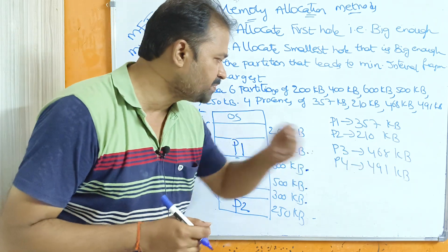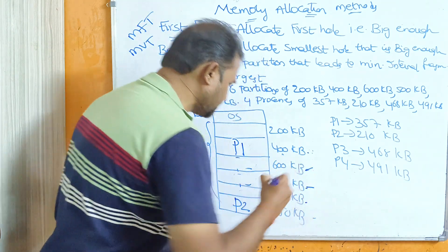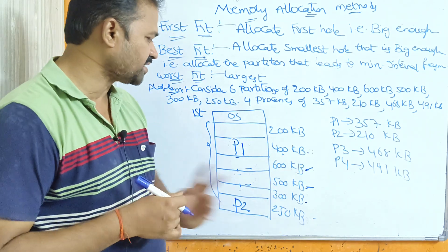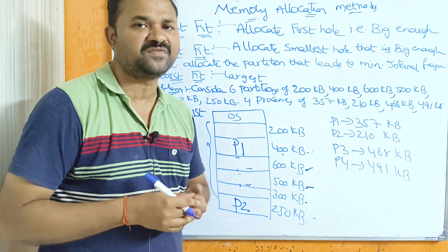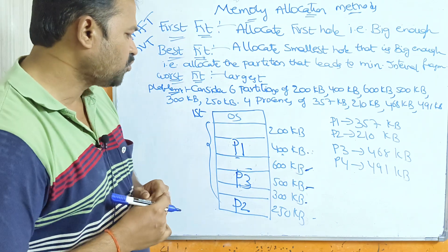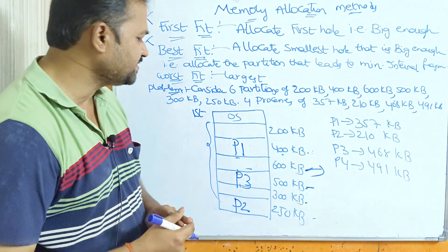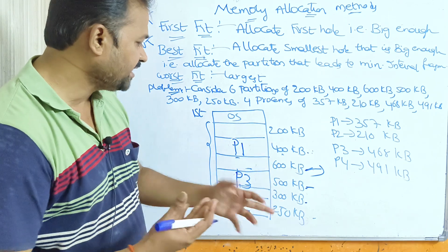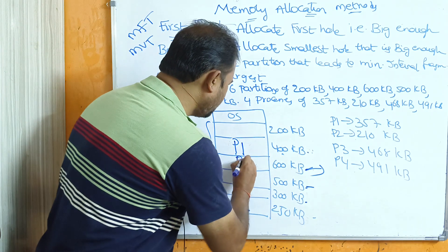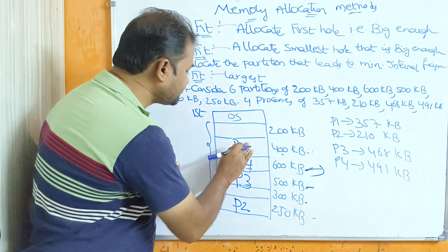For P3 (size 468 KB), we exclude the 400 KB and 250 KB partitions (already occupied). The remaining partitions are 200, 600, 500, and 300 KB. P3 can only fit where the partition size is greater than 468 KB, so it can fit in 500 KB or 600 KB. The smallest of these is 500 KB, but 500 is occupied, so we store P3 in the 600 KB partition.